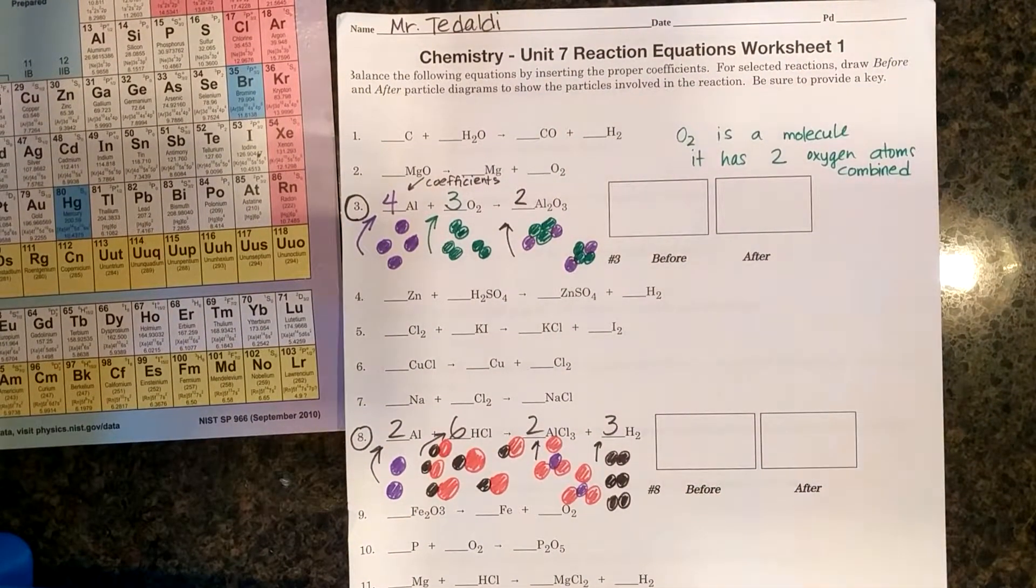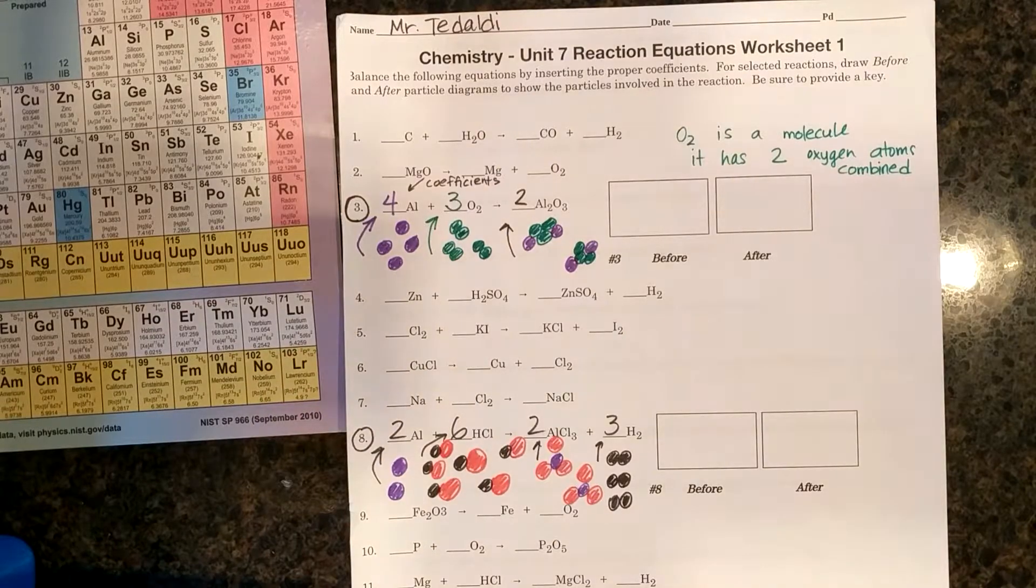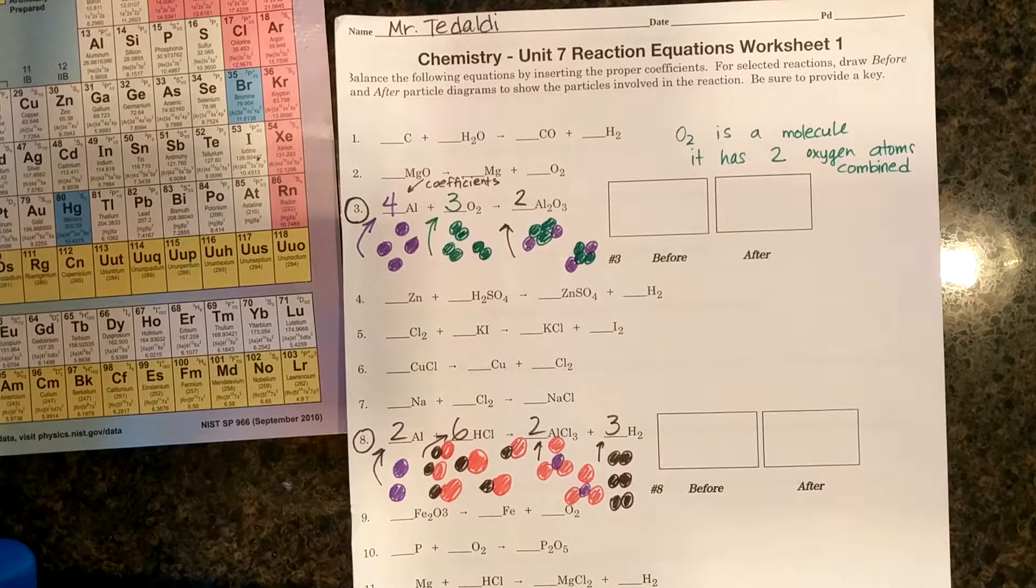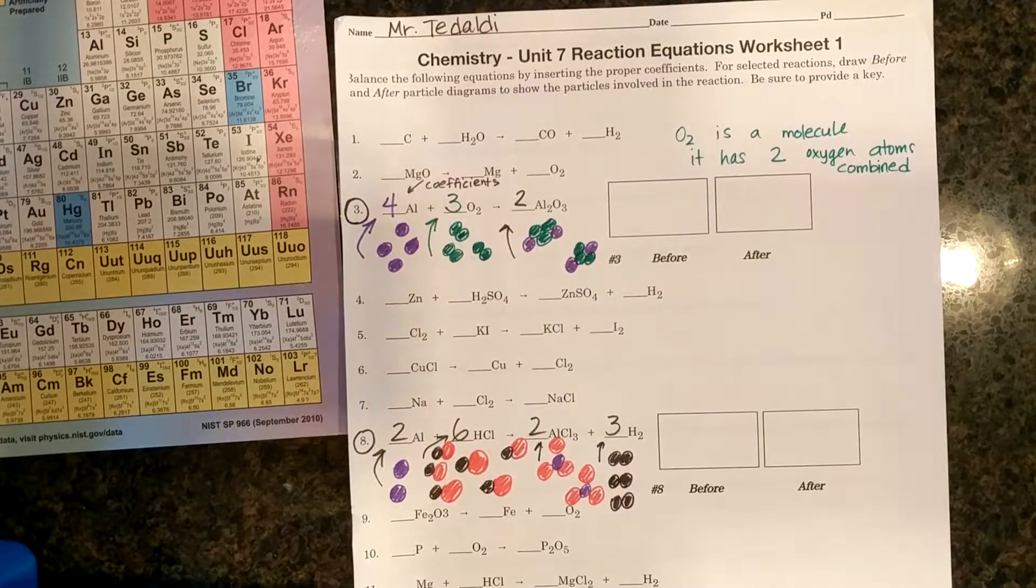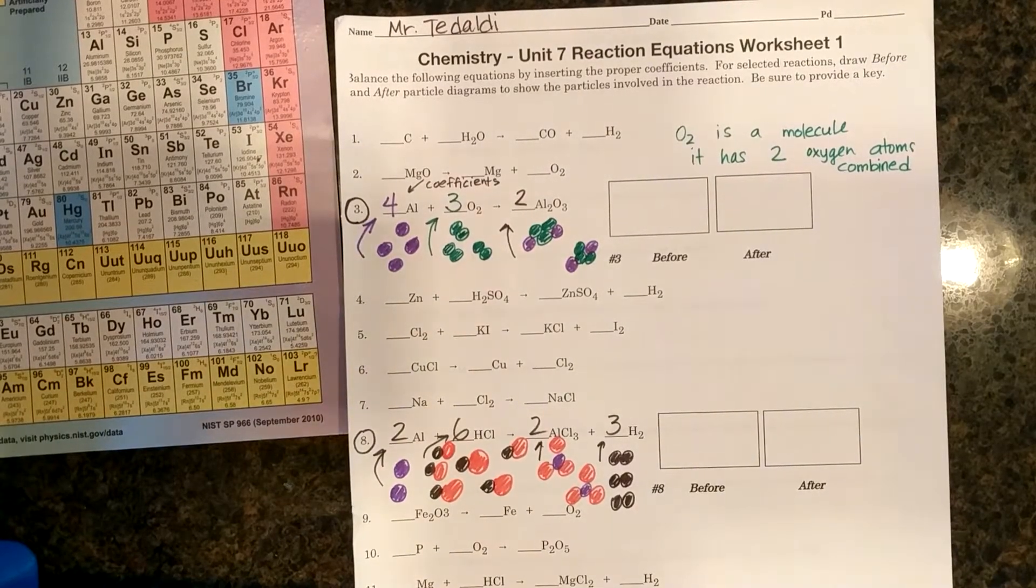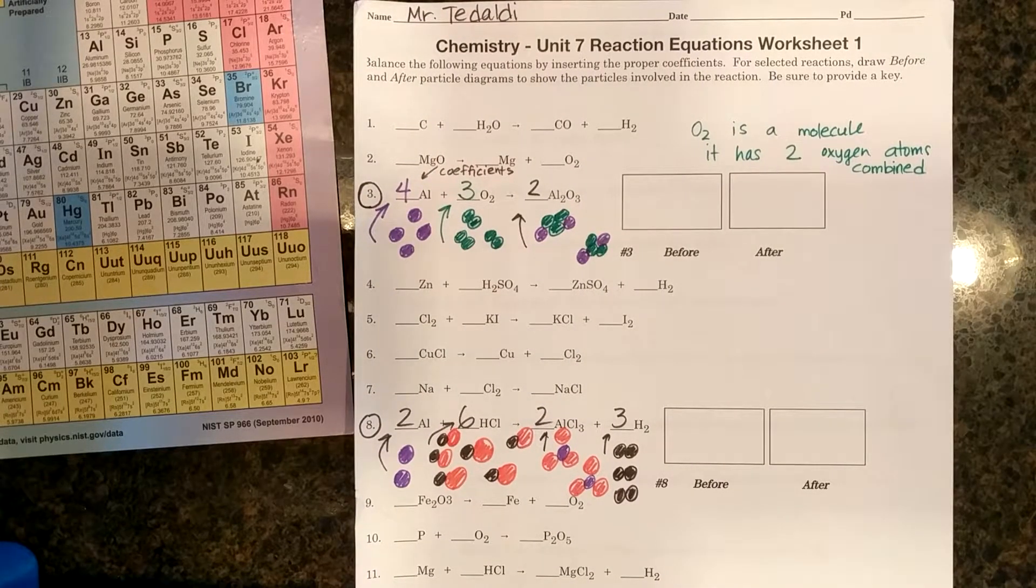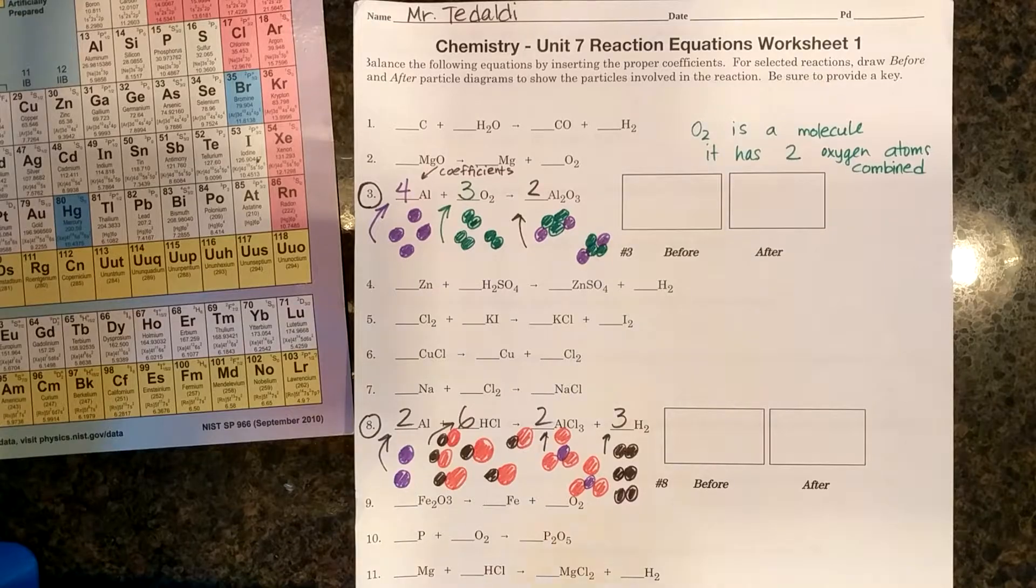All right, hey Honors Chemistry. I wanted to make a recap video to help you understand the last thing that we learned in Unit 7, which was balancing chemical equations. The big idea here is that we can never lose or create matter. Matter needs to be conserved.